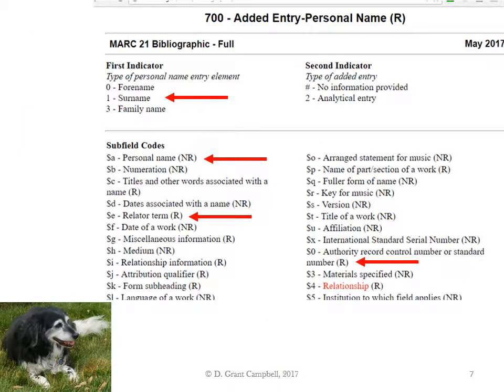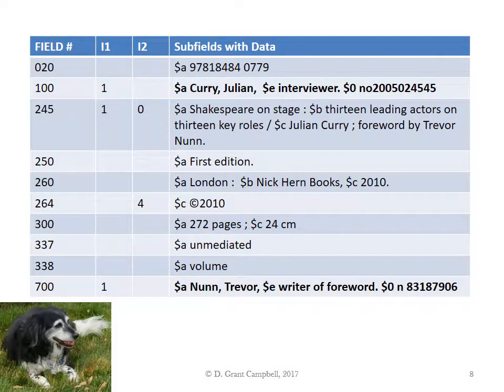For Trevor Nunn's name, we go to the 700 field and we find that it is virtually identical. We have the surname, personal name, relator term, and authority control number, just as we had for the 100 field. And so we have 700, first indicator set to one, subfield A: Nunn, Trevor, comma, subfield E: writer of foreword, period, subfield zero, and then Trevor Nunn's authority number.